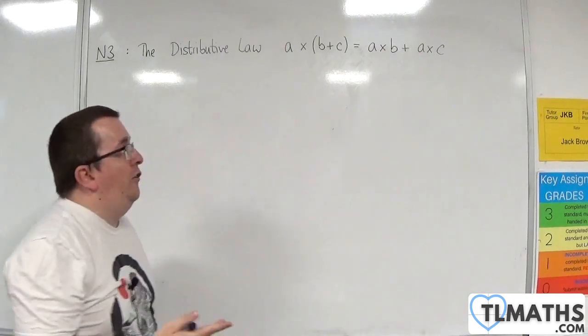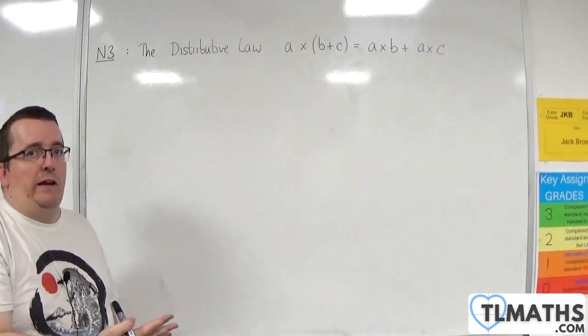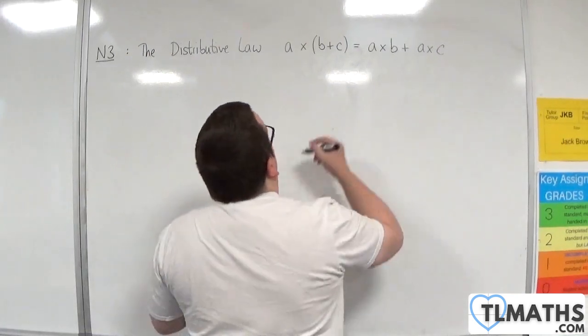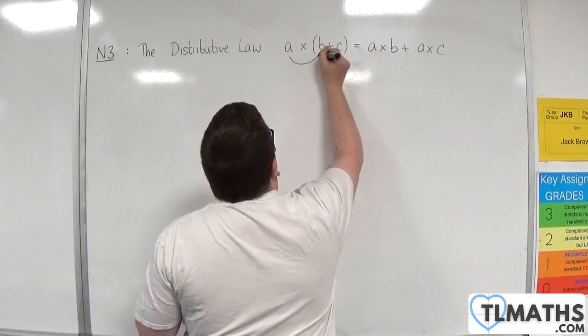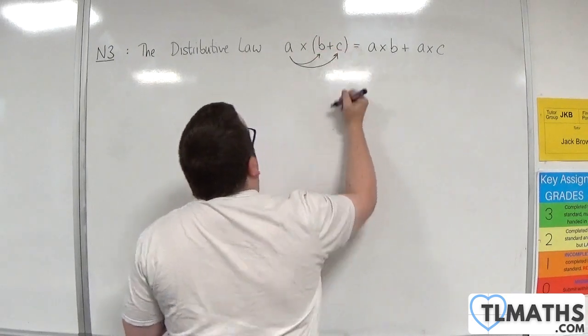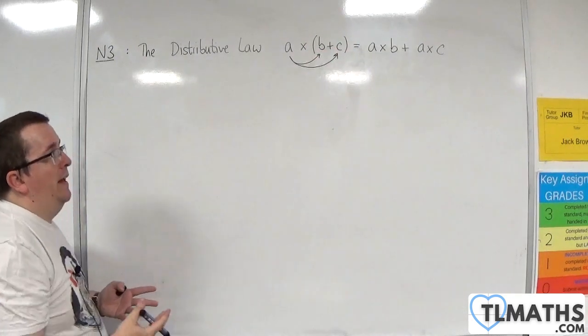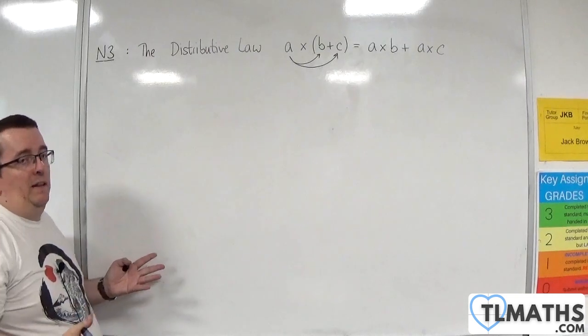Essentially it is explaining what we mean by multiplying out a single bracket. So a gets multiplied by the b, a gets multiplied by the c, and we add the two results together. It is essentially expanding the brackets out.